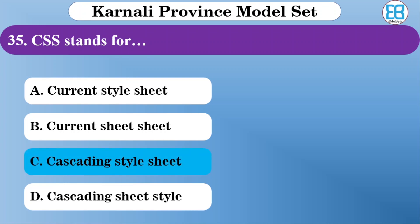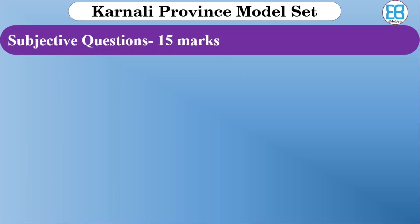Now moving on to subjective questions from the syllabus. The subjective section has 15 marks, with 5-5 mark questions. The first subjective question is: differentiate between RAM and cache memory.